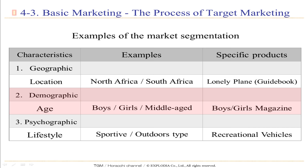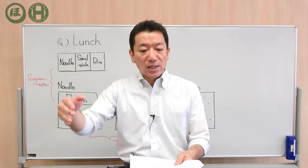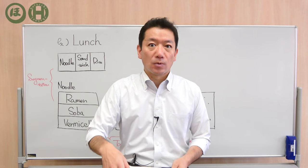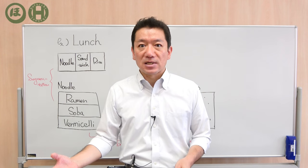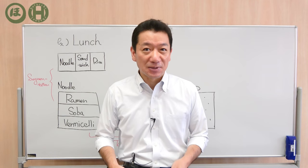For demographic segmentation, the example characteristic is age — examples would be boys, girls, and middle age — and specific products would be boys' magazines, girls' magazines, or magazines for seniors and ladies. For psychographic segmentation, the example characteristic is lifestyles — examples would be sportive type, outdoor type, or indoor type — and a specific product would be recreational vehicles. Usually these segmentation types are used in combination; for example, a Vietnamese man or a Myanmar lady working at an IT company with a certain annual income.